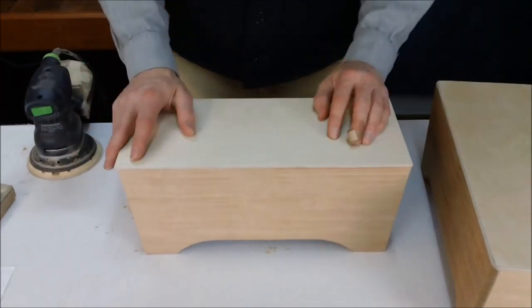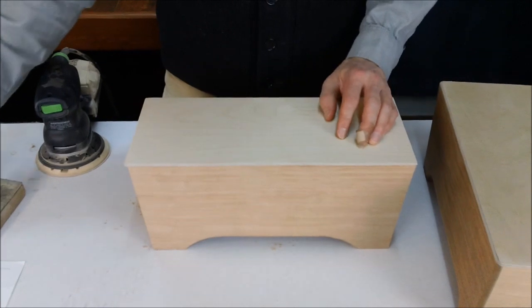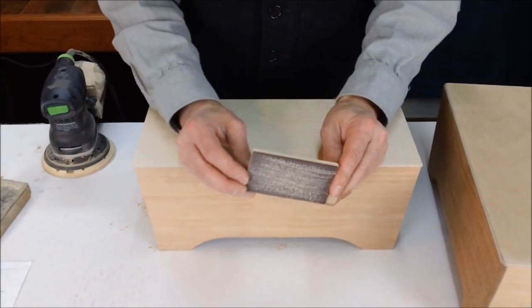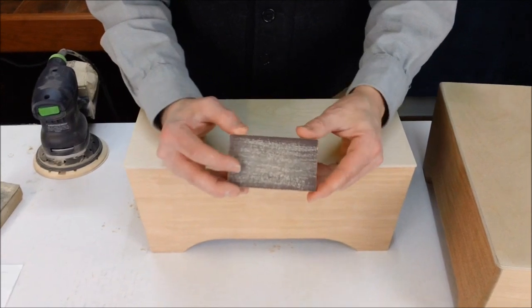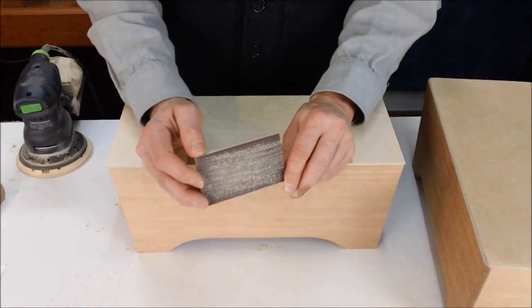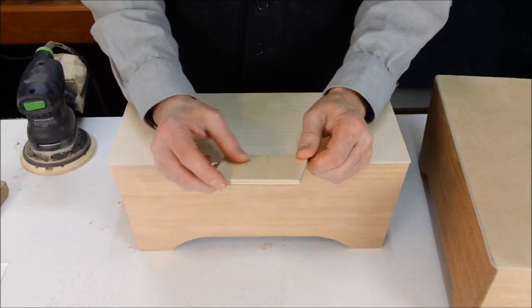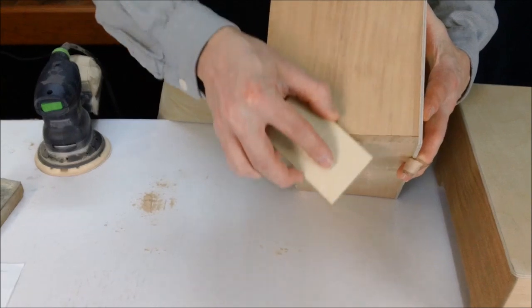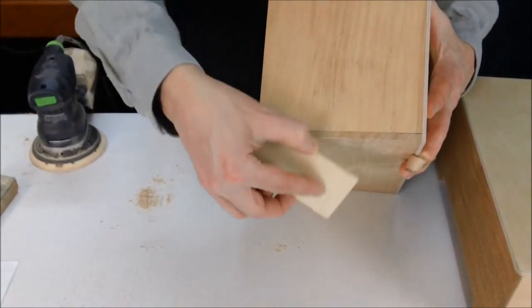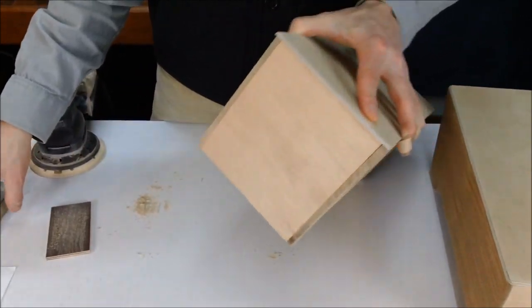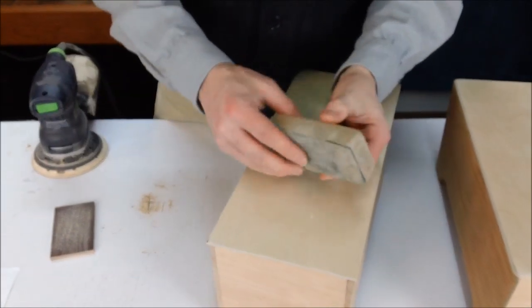If you don't have access to any of that, you can use things like a sanding block. You can just make your own, again just glue some hundred grit paper, use some double stick carpet tape and put some hundred paper on a flat block. And that'll help you shape things, especially that you can shape corners with something like this.